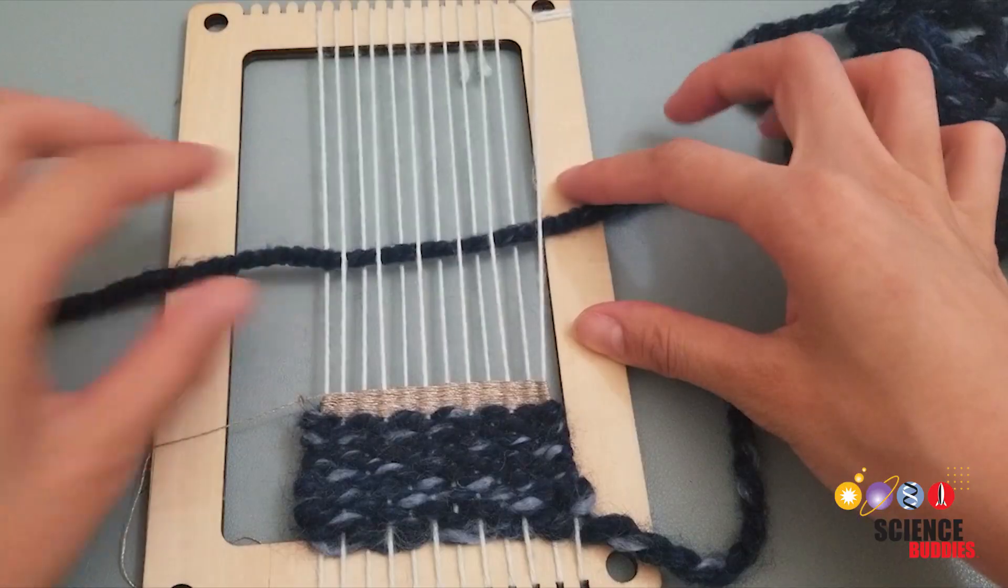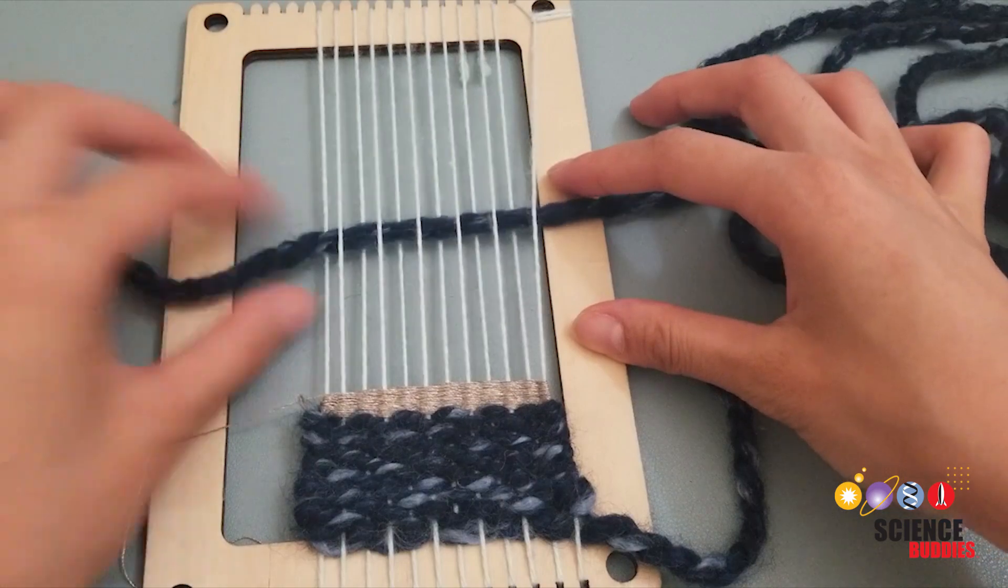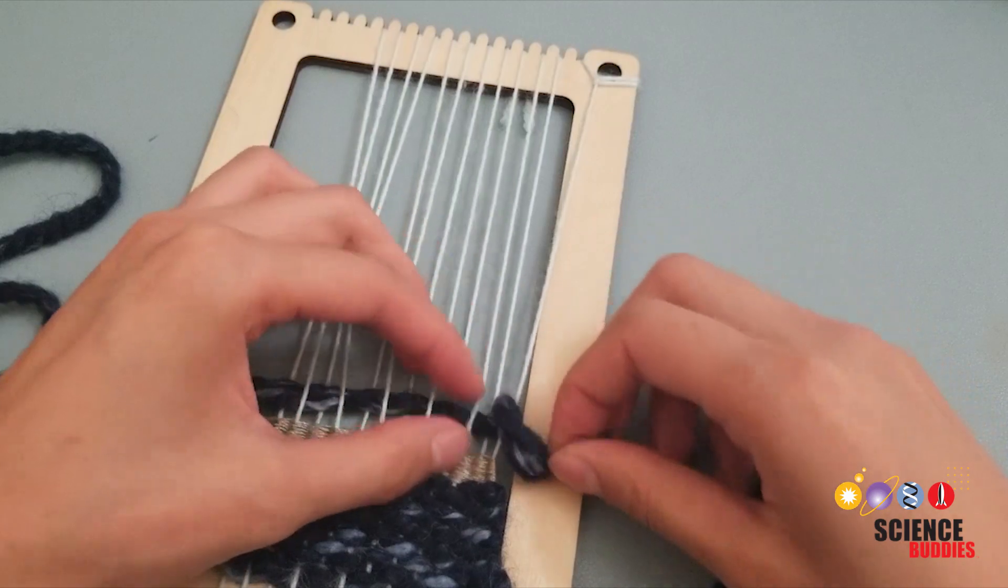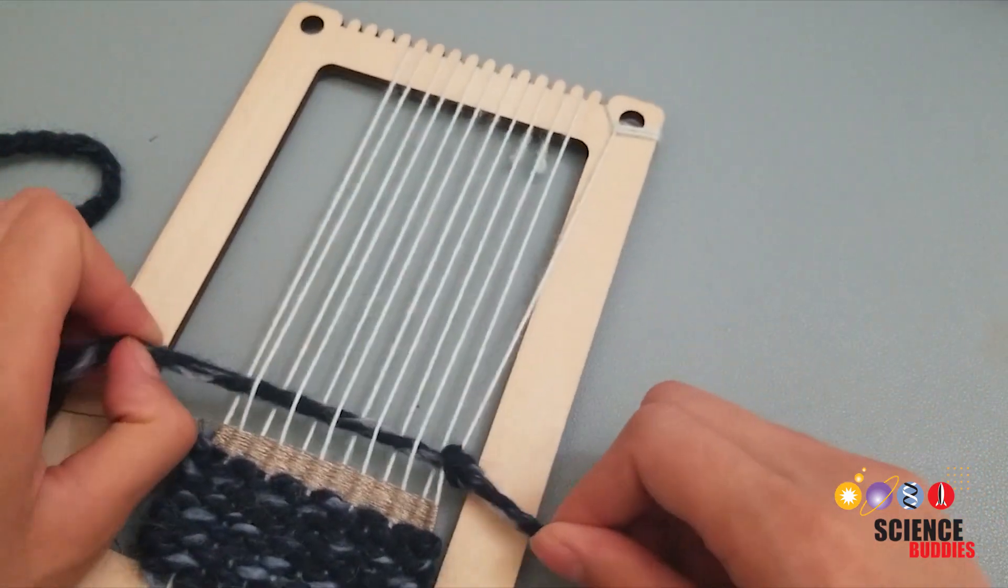Start a new section. To start, once again, cut about 6 feet of yarn. Start by leaving a tail of 3-4 inches. Now tie the tail to the last warp. Weave 1-2 inches again.